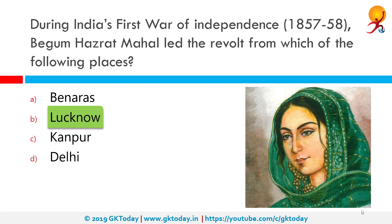Begum Hazrat Mahal, also known as Begum of Awadh, was the second wife of Nawab Wajid Ali Shah. She rebelled against the British East India Company during the Indian Rebellion of 1857. She finally found asylum in Nepal, where she died in 1879.